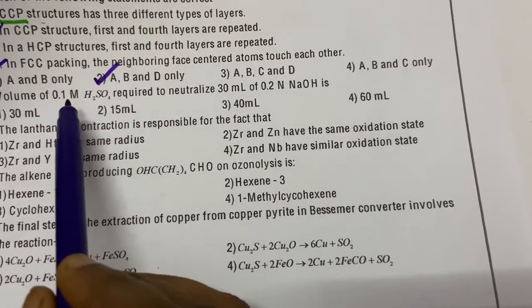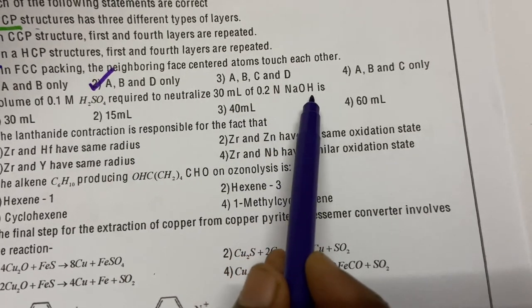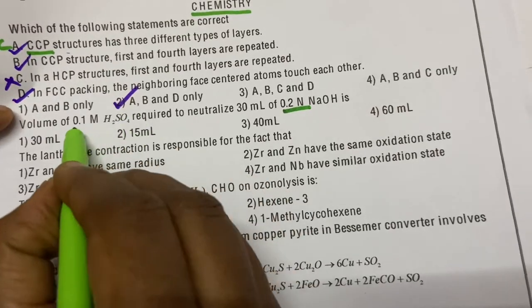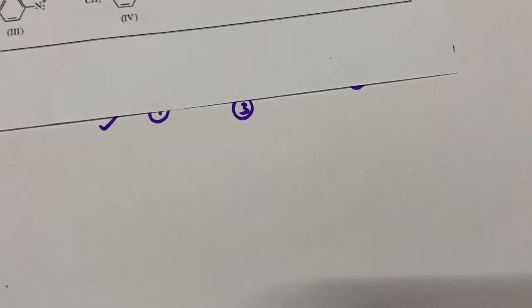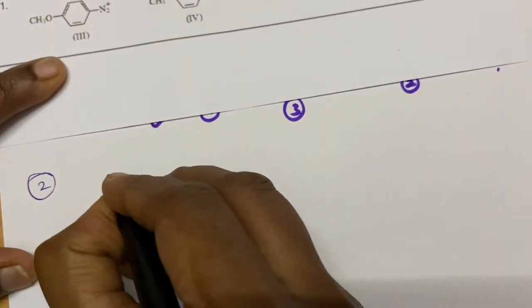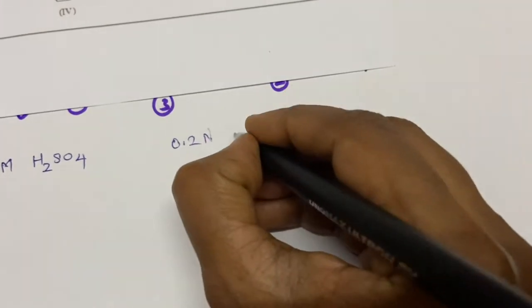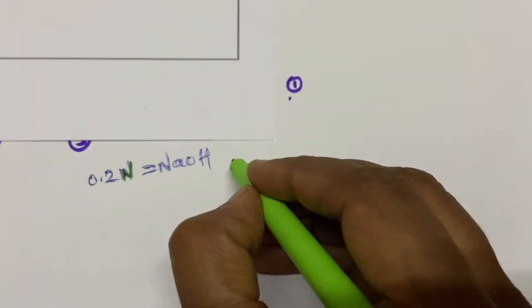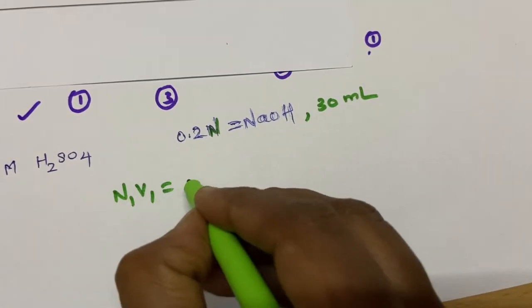Second question: Find the volume of 0.1 molar H₂SO₄ required to neutralize 30 mL of 0.2 normal NaOH solution. Notice that sodium hydroxide has been given in normality and sulfuric acid has been given in molarity. They have given 0.1 molar H₂SO₄ and 0.2 normal NaOH using 30 mL. To use the formula N₁V₁ = N₂V₂, we need to convert the H₂SO₄ concentration to normality.